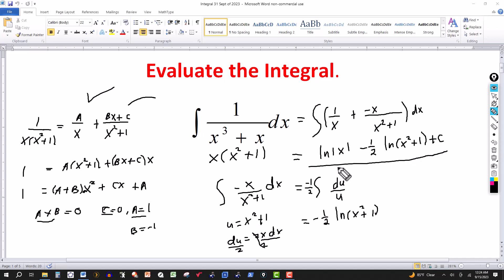So minus 1 half natural log of x squared plus 1, that's how I got this second part here. This is your complete answer right here: natural log of absolute x minus 1 half natural log of x squared plus 1 plus your constant of integration. Thanks for watching, we'll see you next time.